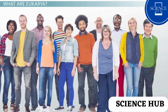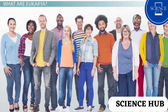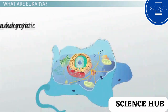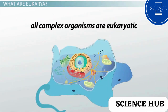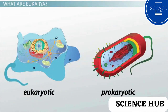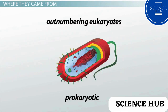We as humans are classified as Eukarya — all of our own cells have a nucleus and membrane-bound organelles. In fact, all complex organisms are eukaryotic; there's just no real way for prokaryotic organisms to grow into the complexity that eukaryotes have. Eukarya represent only a small amount of living organisms, with prokaryotes outnumbering them by a large margin.